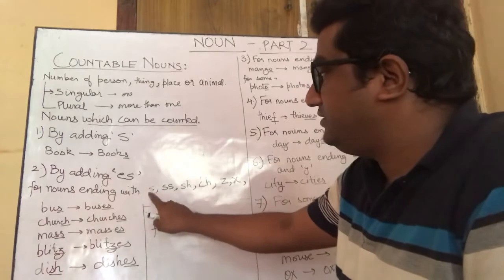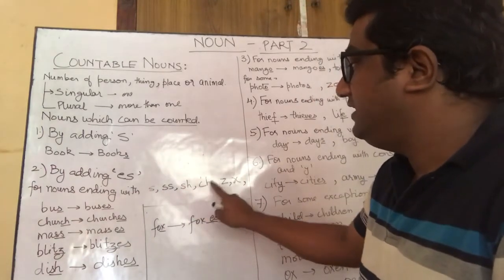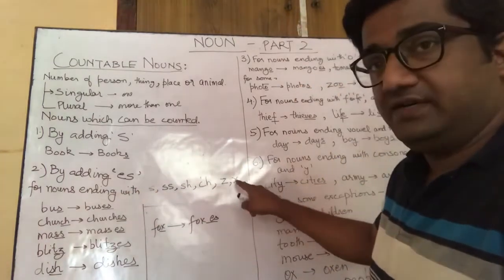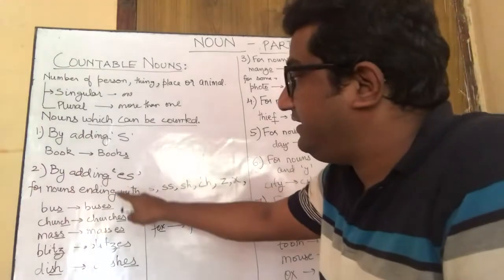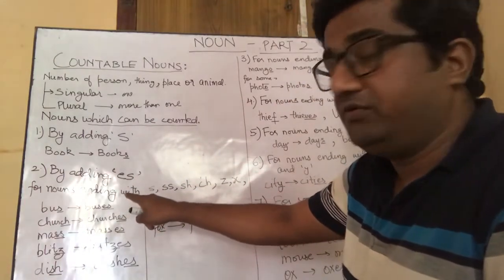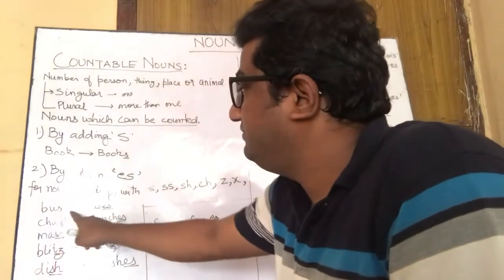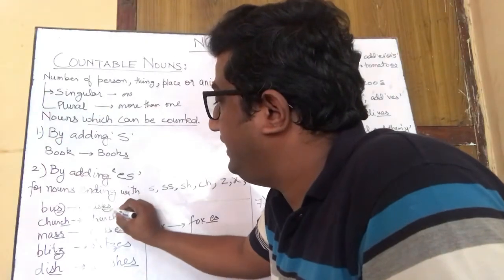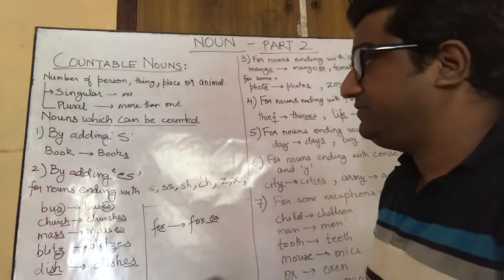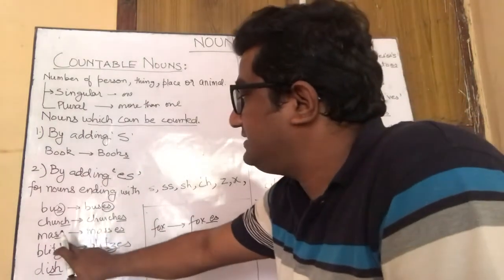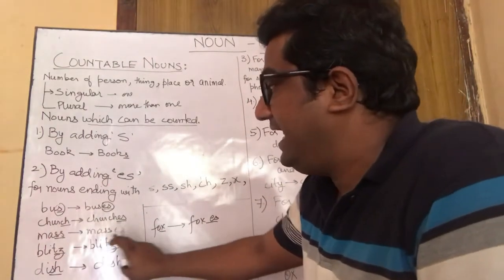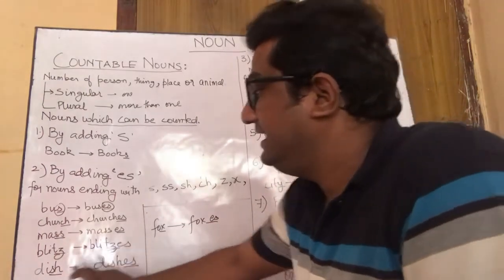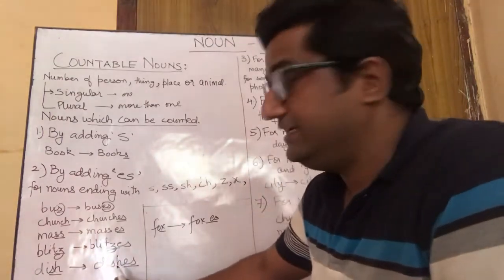For nouns which end with S, SS, SH, CH, Z, or X, they are converted into plural form by adding ES. For example, bus becomes buses — it ends with S, so we add ES. Church becomes churches, mass (M-A-S-S) becomes masses (M-A-S-S-E-S), blitz becomes blitzes, dish (D-I-S-H) becomes dishes, and fox becomes foxes.